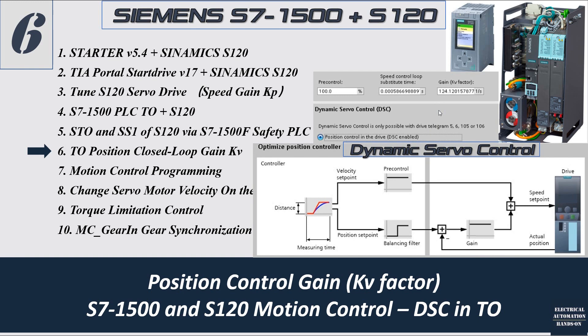We will especially discuss the DSC — Dynamic Servo Control. This DSC allows the positioning closed loop to be located in the drive side, in the drive CU (Control Unit). When we use a Siemens servo drive, for example Siemens S120 or S210, we enable this DSC function. Your control closed loop gain actually resides in the drive side.